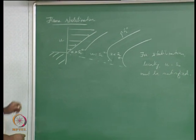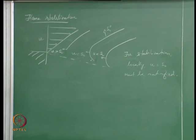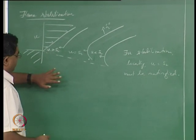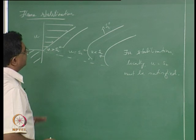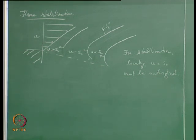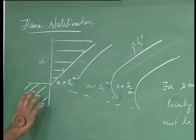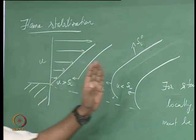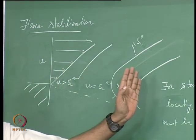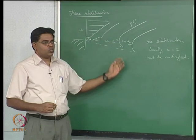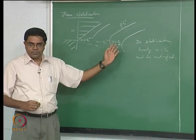For a fuel lean flame, air coming in and diluting the mixture is going to decrease SL further. As you get closer to the burner, the decrease in flame speed is more due to heat loss and less due to dilution. As the flame goes further away from the burner, the decrease in SL0 is more due to dilution and less due to heat loss.